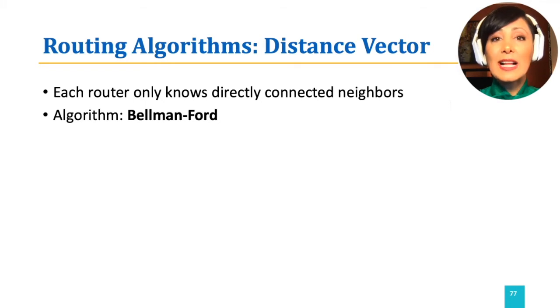In distance vector algorithms, a router does not have a complete view of the network's connectivity and link costs. It starts with having only the cost of links directly connected to it. And by receiving cost information from its neighbors, it iteratively computes path costs to other nodes in the network.